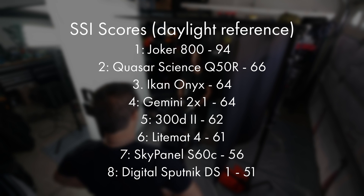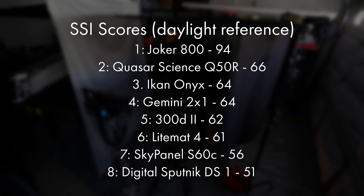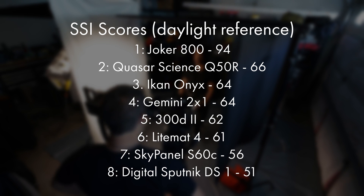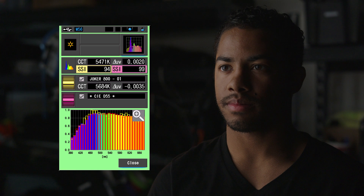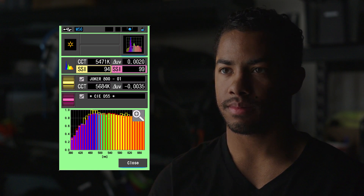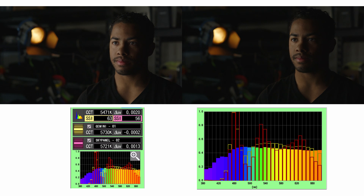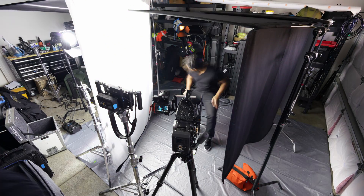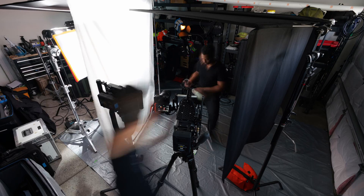I wanted to keep the quality of light consistent, so I used a roll of full silent grid as diffusion so that each light had similar softness. Full grid does warm up the source a bit, but only by about 120K. When looking at SSI, it's no surprise that the Joker was the best match for natural daylight with a score of 94 — HMIs have pretty much been the gold standard for daylight sources. I was actually pretty impressed with how well the Gemini did; it has a smoother power distribution and a higher SSI compared to the sky panel. I like measuring SSI using stock settings so I can gauge how well a light performs at what the manufacturer deems as baseline, giving each light a fair advantage to provide an accurate representation.